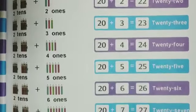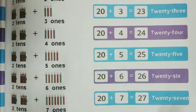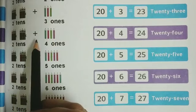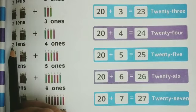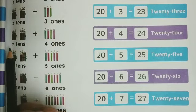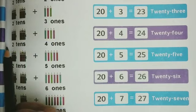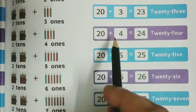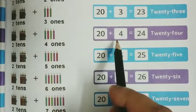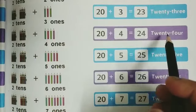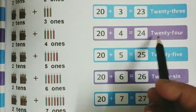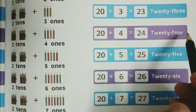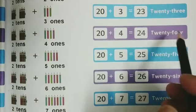We will move further. Number 24: one, two, three, four — four ones — plus two tens. Two tens means 20 objects or 20 pencils. We will add them: 20 plus 4 equals 24. The spelling is T-W-E-N-T-Y (20) F-O-U-R (4): twenty-four.